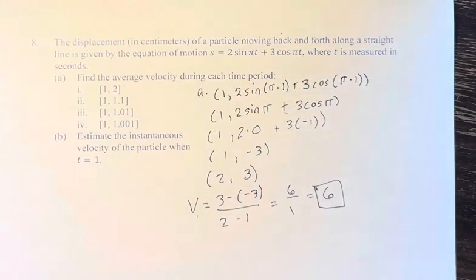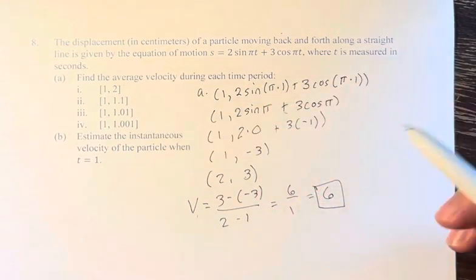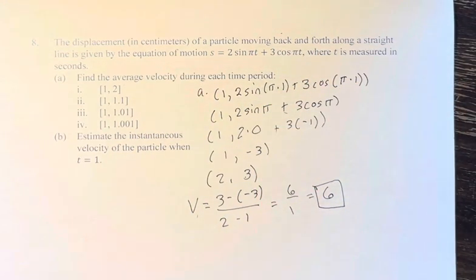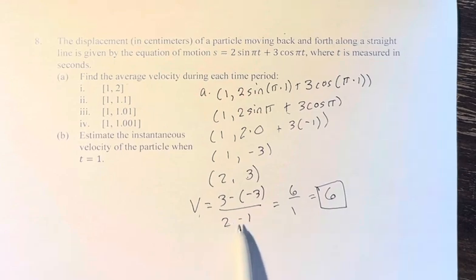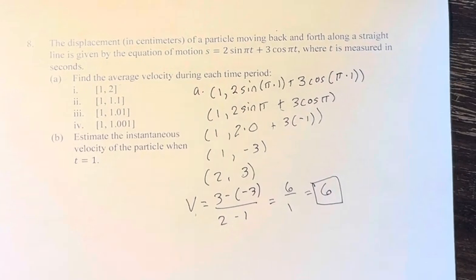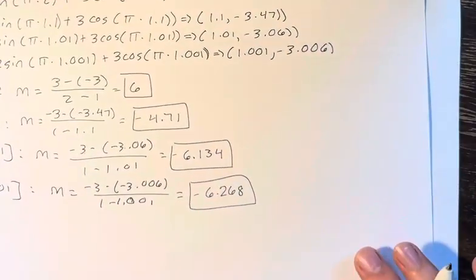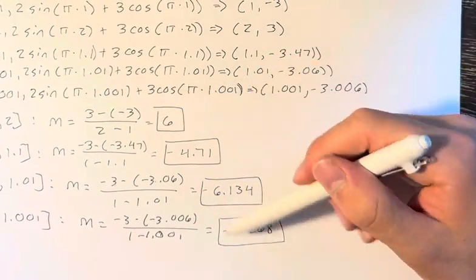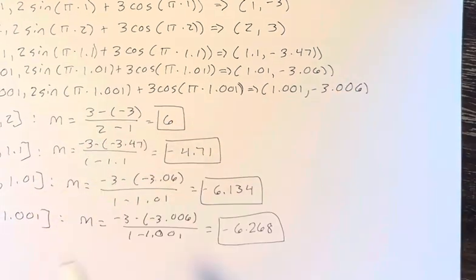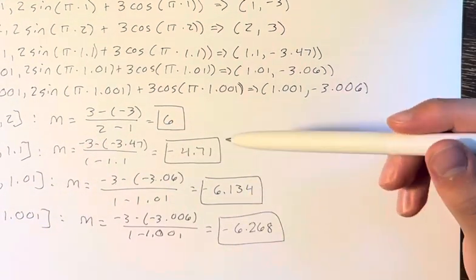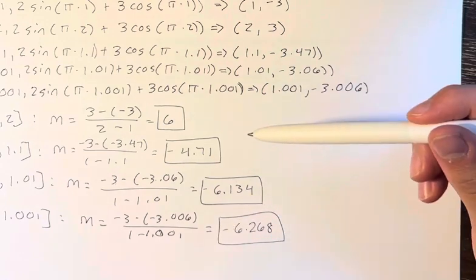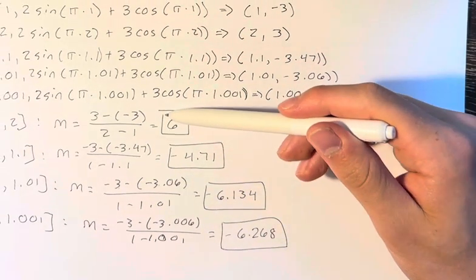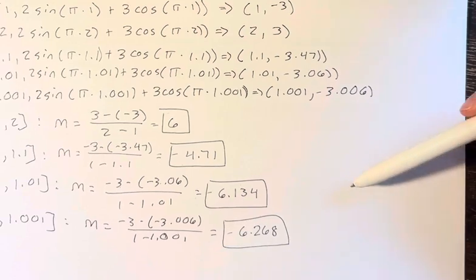We want this to get down to 0, right? We want it to be instantaneous. We can't calculate that because down here it would be 1 minus 1, which is 0. But we can look at this and ask: what values are these approaching as we get closer to an interval of 0 distance? We can see that as we get closer, the distance between these jumps is getting smaller and smaller.